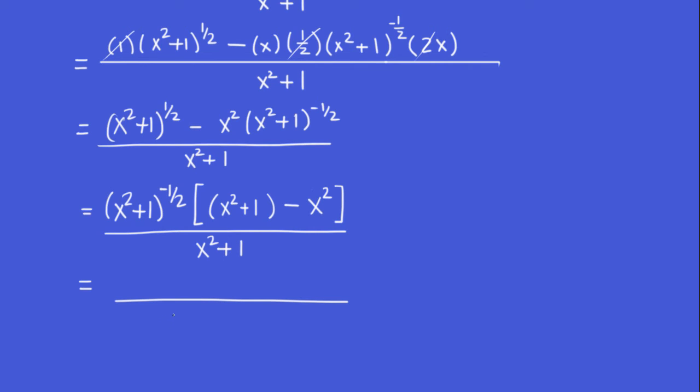What we can do maybe is... This power of negative one half here, let's bring it to the bottom level. So we have x squared plus one from before. And then x squared plus one to the minus one half.